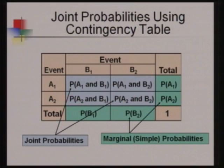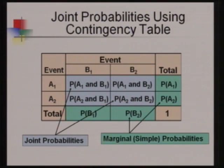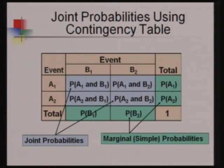To explain the contingency table structure: if event A1 and A2 are defined as rows, and events B1 and B2 as columns, then each cell gives the joint probability. For example, the first cell gives P(A1 and B1), and the first row second column gives P(A1 and B2). The marginal probability P(B1) equals P(A1 and B1) + P(A2 and B1). Importantly, the total of all probabilities in the bottom-right of the contingency table is always 1 — you cannot go beyond 1.